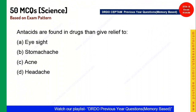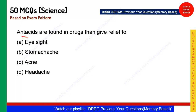Next question: Antacids are found in drugs which give relief to what? Antacids are prescribed by doctors for acidity or stomachache. Antacids reduce the acidic effect by providing content with a higher pH value.